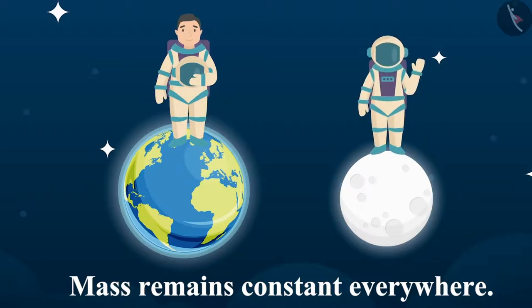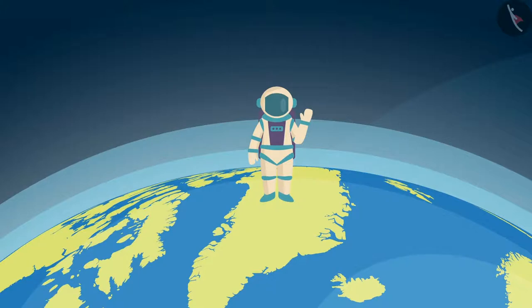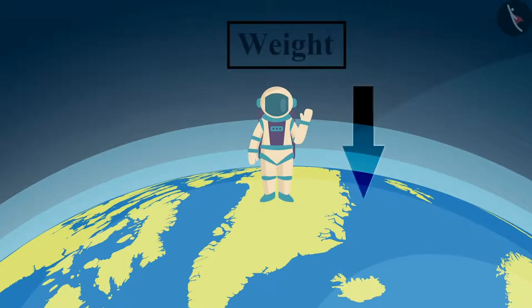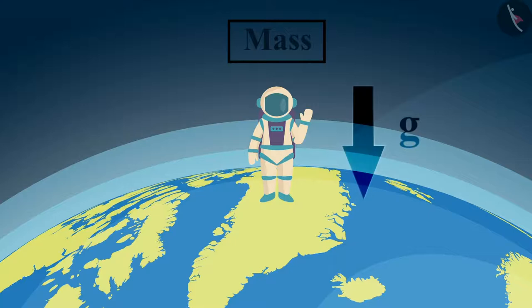Mass does not vary from place to place. We know that the earth attracts every object with a certain force. The weight of an object is this force with which it is attracted towards the earth. This force is defined on the basis of the mass of the object and the acceleration acting due to gravity.